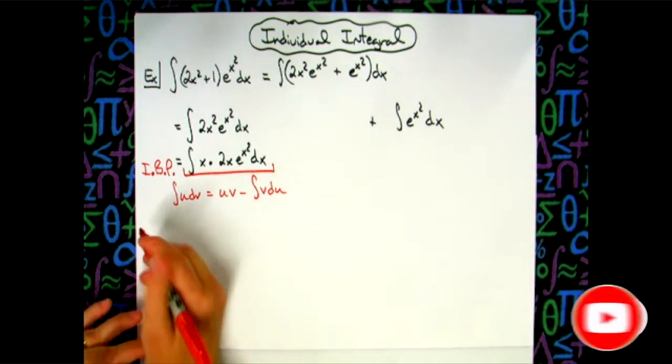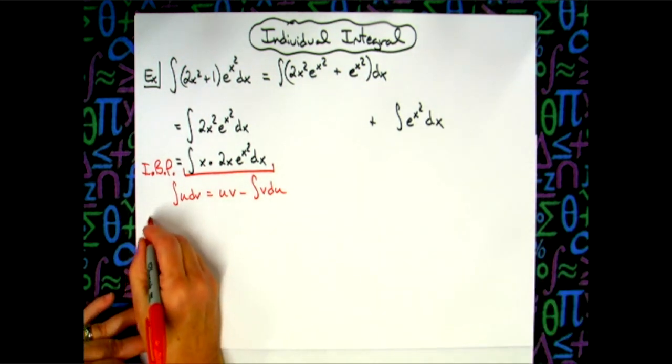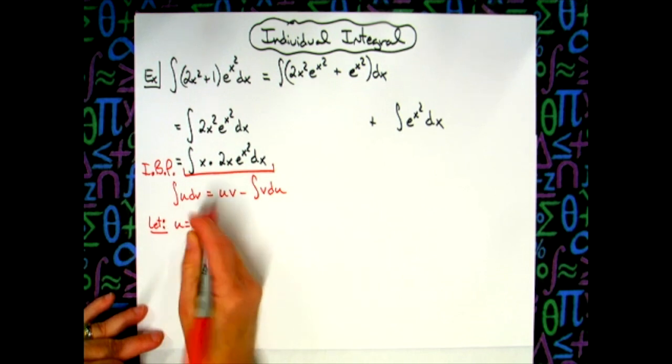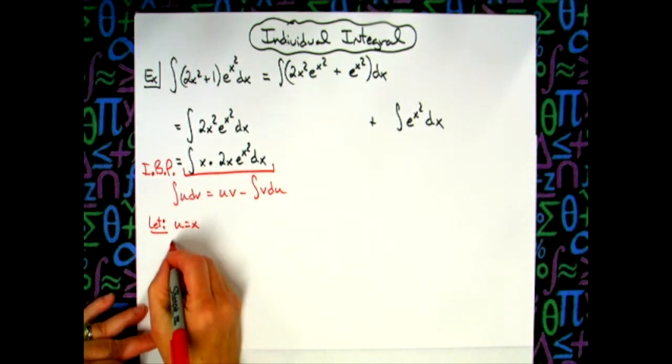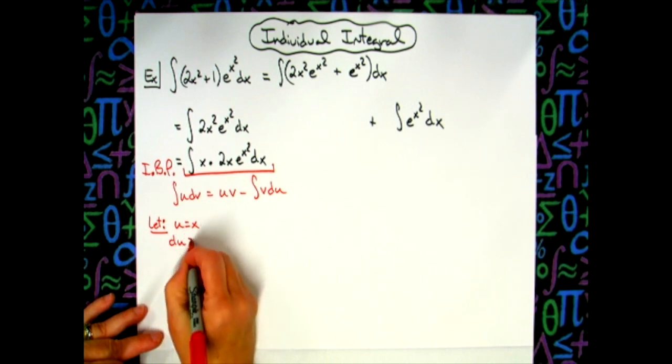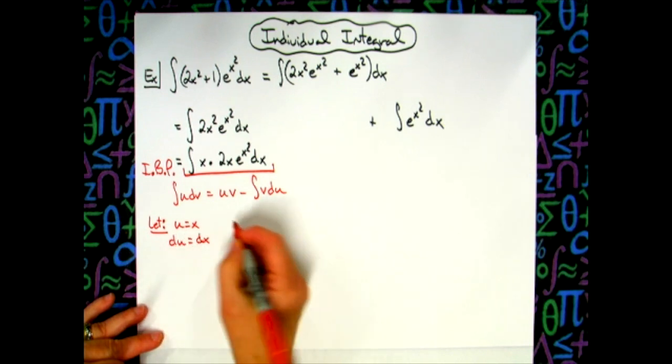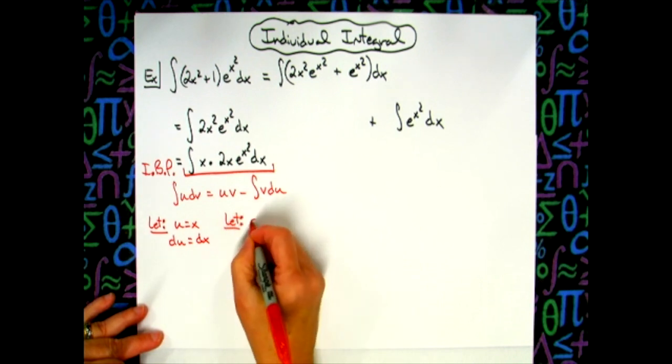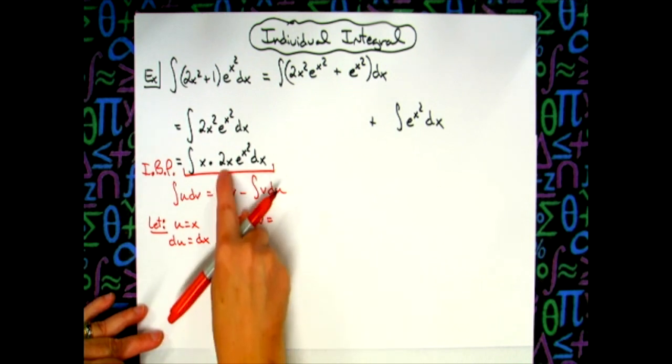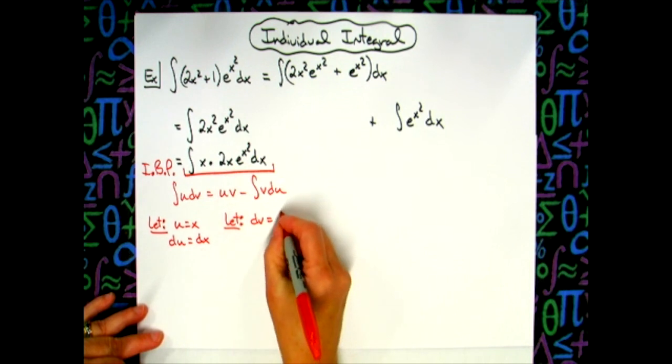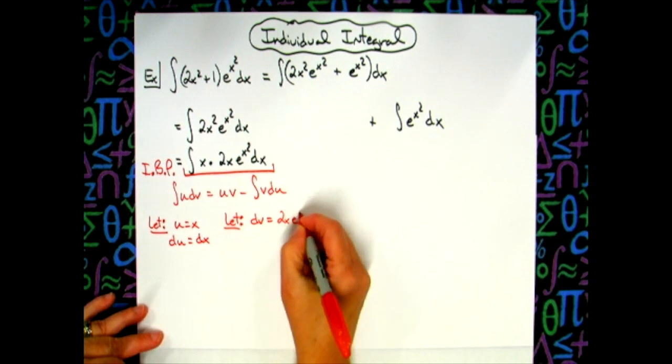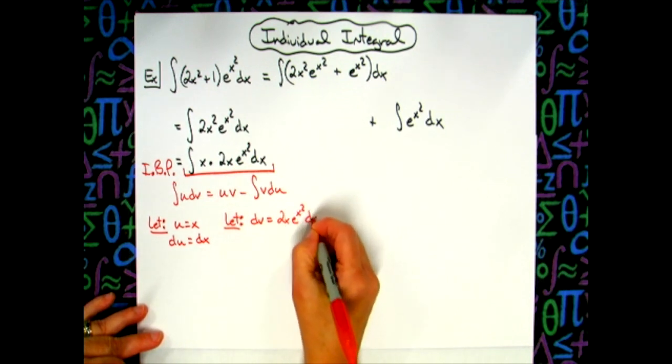So let's identify all of our parts. We're going to let our u be the x right there. That's going to make our du equal to dx. We're going to let our dv be equal to everything else, which will be 2xe^(x²) dx.